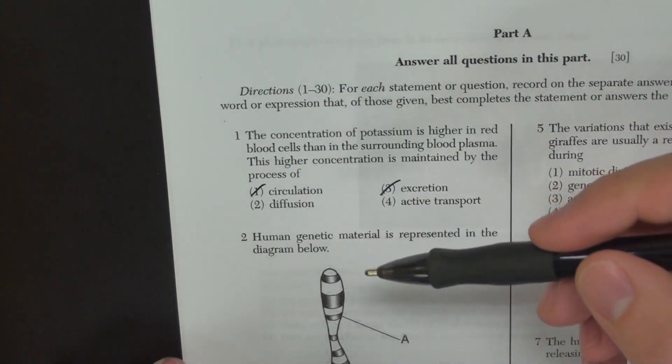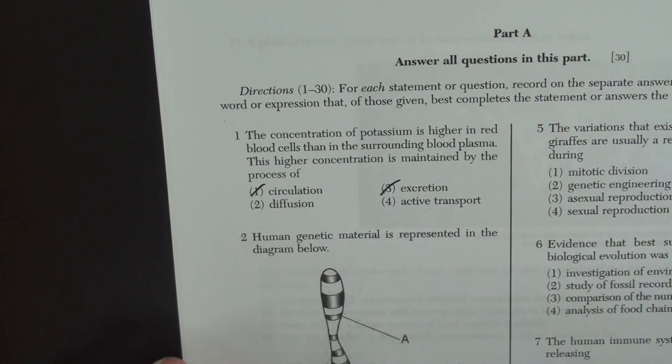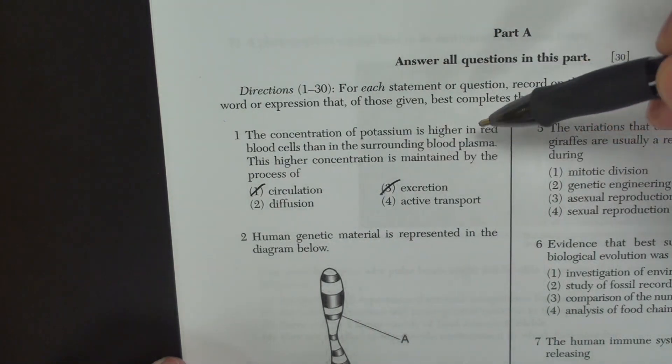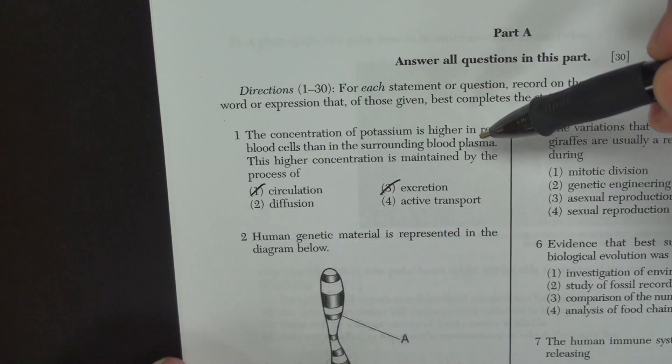This is kind of a trick question because they want you to say, oh, it's got to be diffusion, you know, high concentration to low concentration. But if you go back and look into the question, you'll see that the potassium is higher in the red blood cells than the surrounding blood plasma.